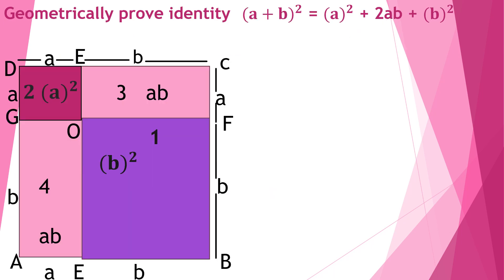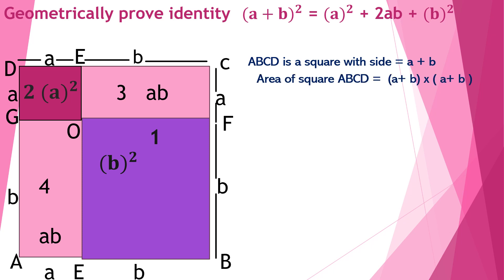Now let's look at the figure drawn on the board. I have drawn a big square ABCD with all sides equal to (a + b), so ABCD is a square with side (a + b). The area of square ABCD is therefore (a + b) × (a + b) = (a + b)².